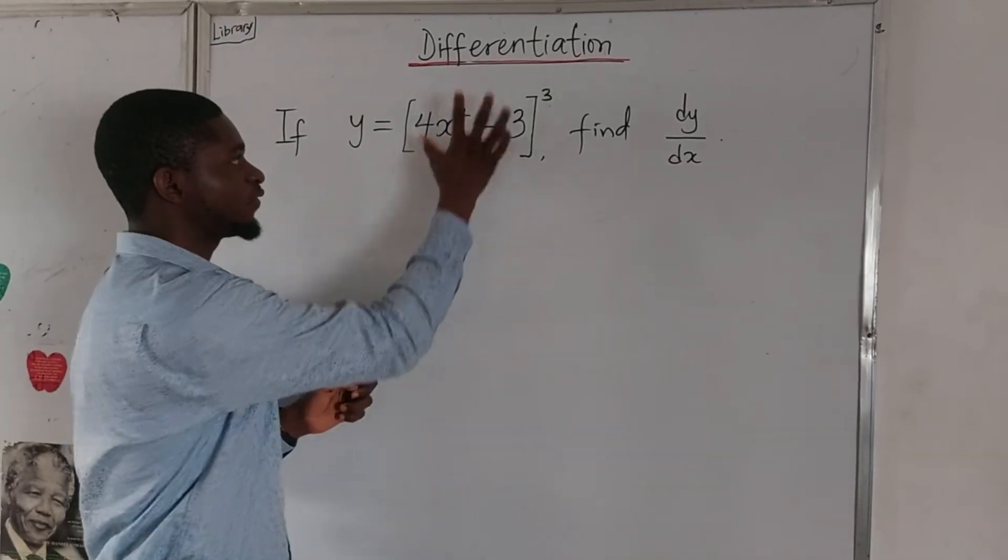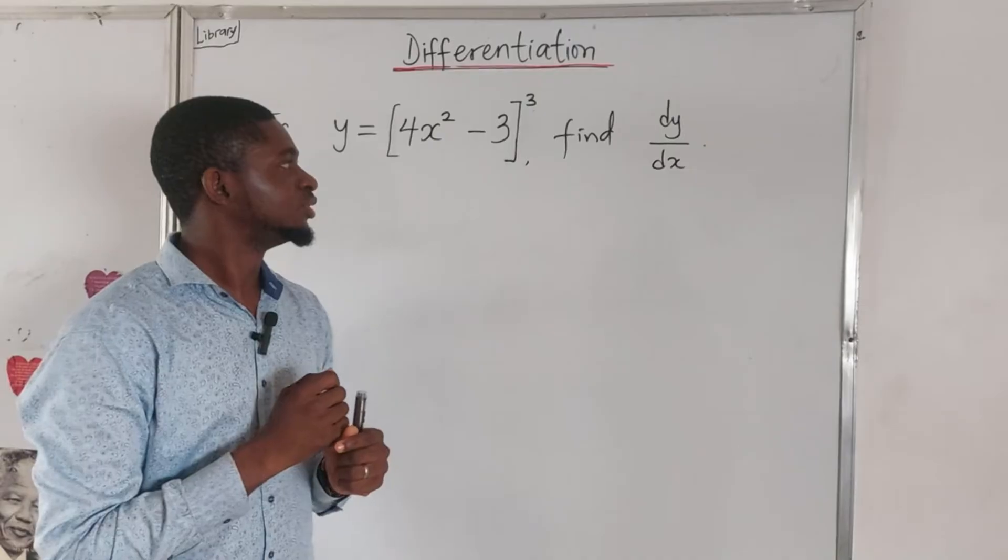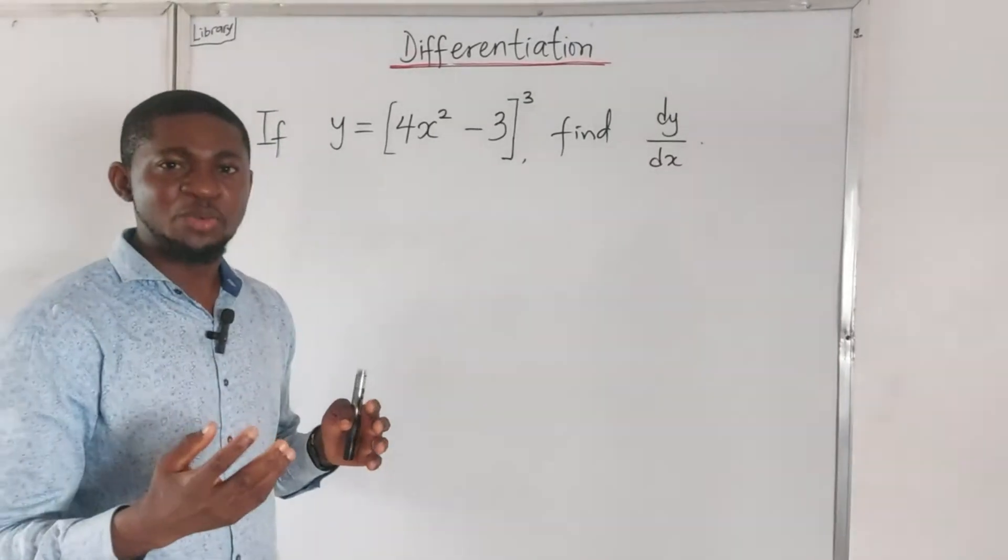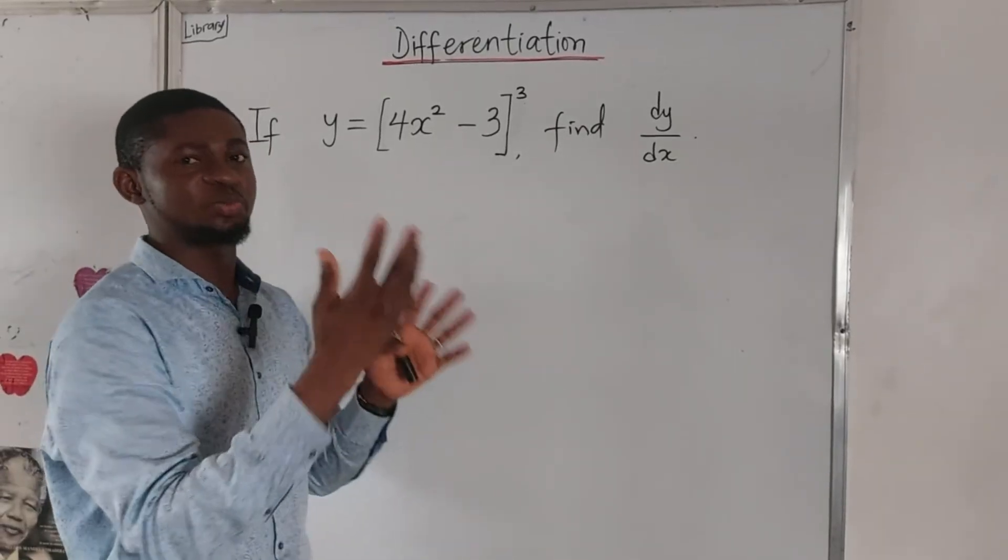Because we have a function that is raised to a particular power, so we use chain rule. That means in your regular way of solving it, you let the function inside be u, then y is equal to u raised to power 3.